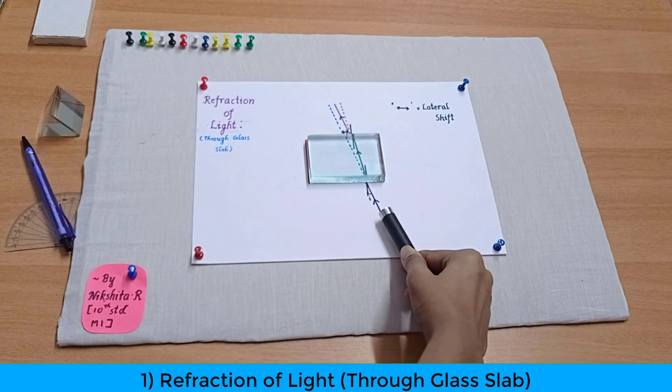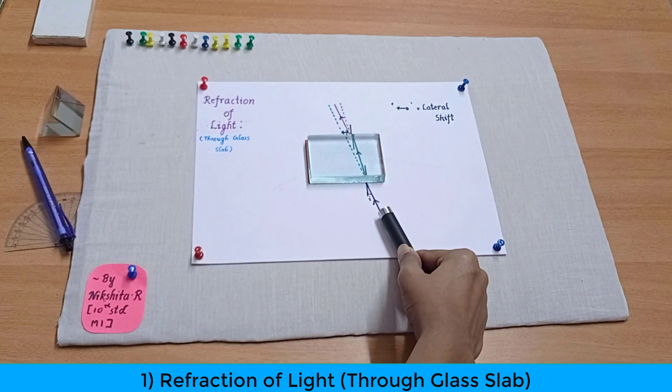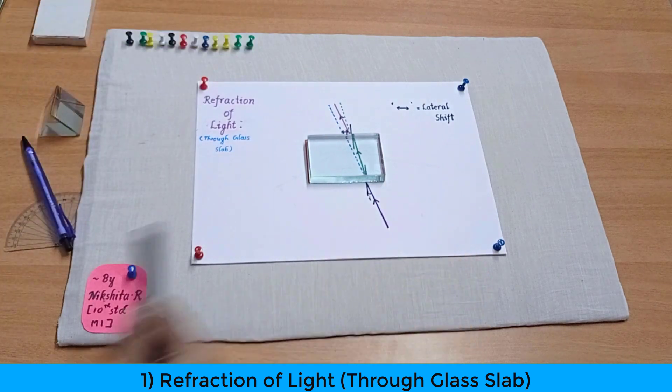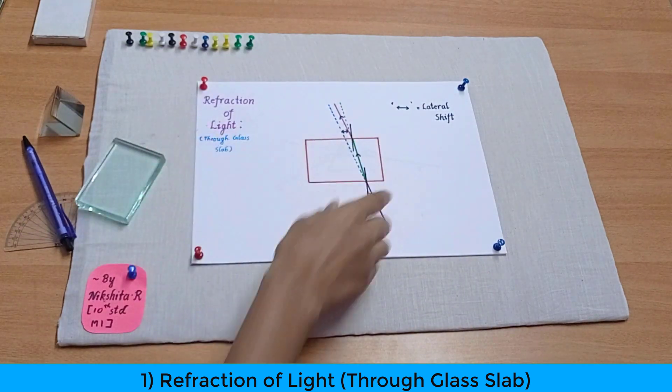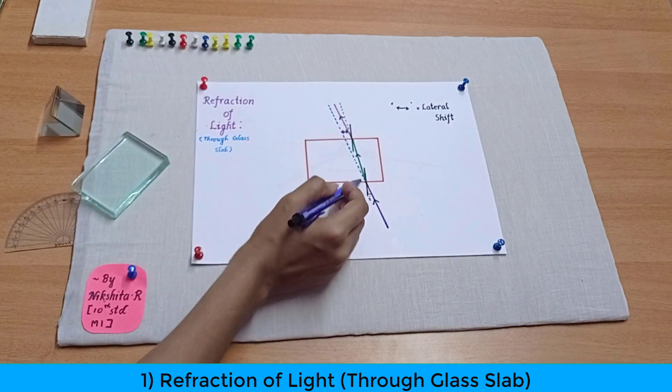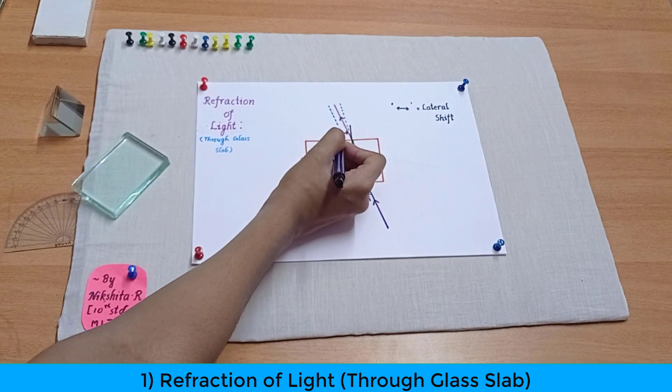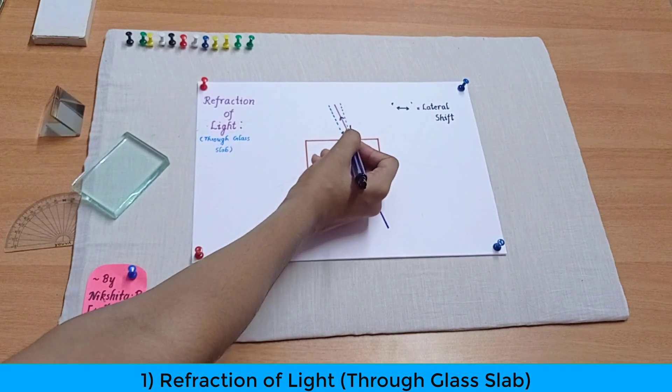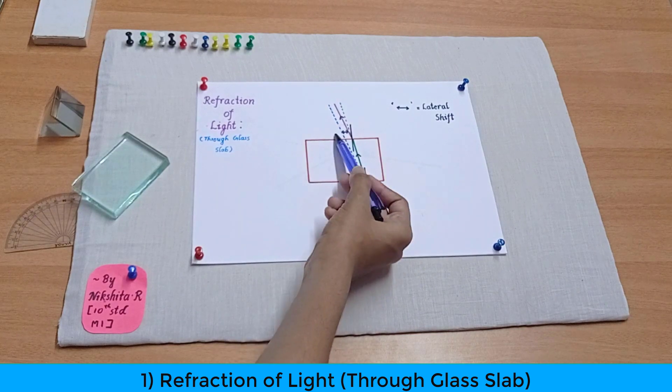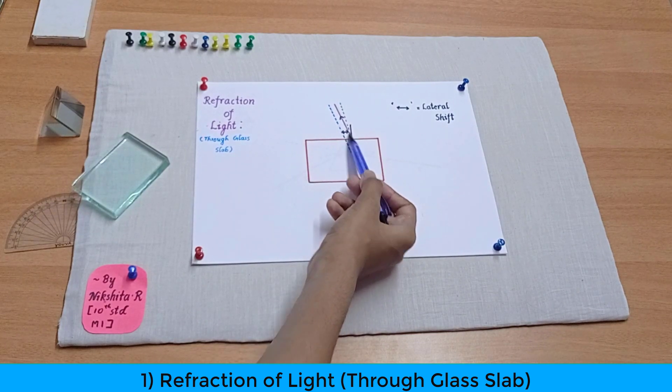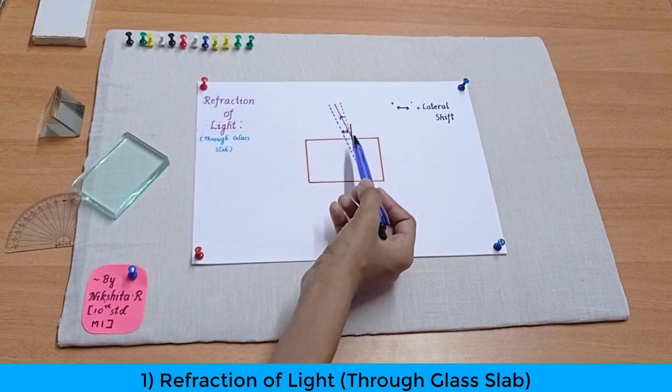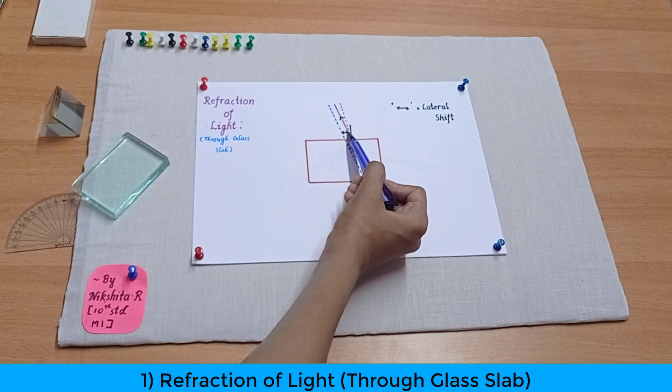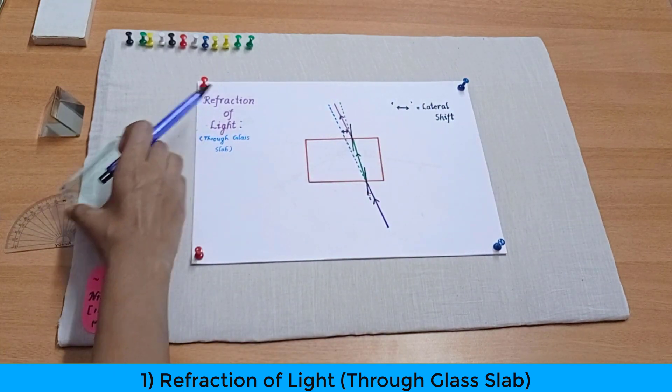As you can see I am incidenting it over here and it's coming out from this end. So now let's compare these both rays. Just extend this incident ray backwards and compare this incident extension with the emergent ray. So we observe that these both are parallel to each other and they will never meet each other. And the distance between these both rays is known as the lateral shift.